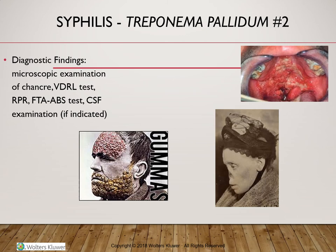To review the stages: in the primary stage there is a painless ulcer that shows up on the genitals, anus, cervix, or other parts of the body. It is a small papule that ulcerates and heals within a few weeks, so many clients will not seek help. Untreated, it develops into the second stage with fever, flu-like symptoms, malaise, lymph node enlargement, a rash on the trunk, back, arms, palms and soles that does not itch, patchy hair loss, headache, and sore throat. All those signs and symptoms will disappear even without treatment.